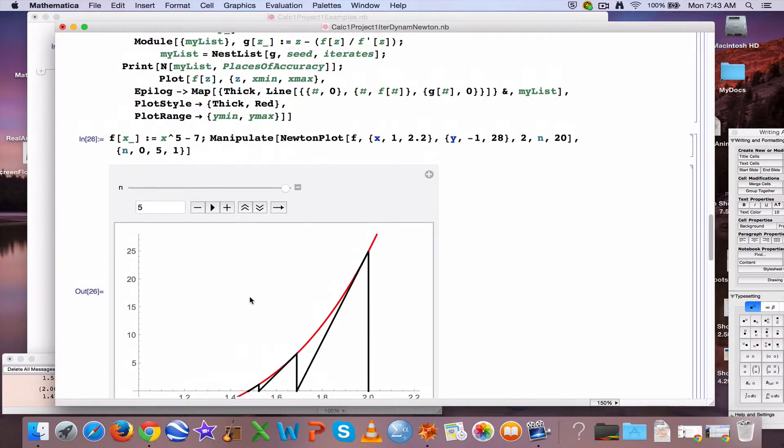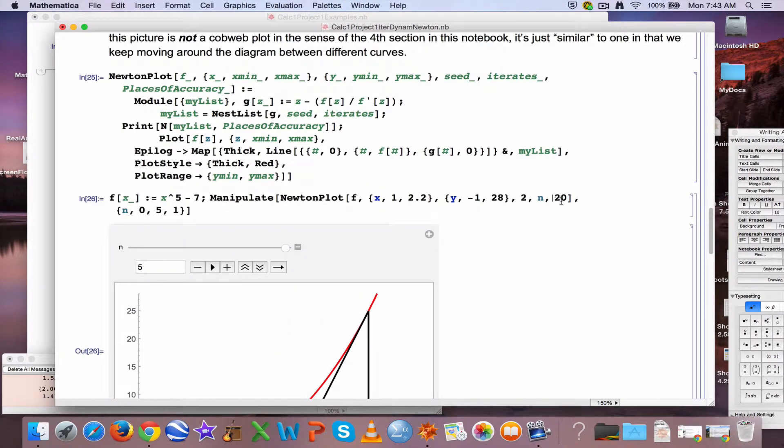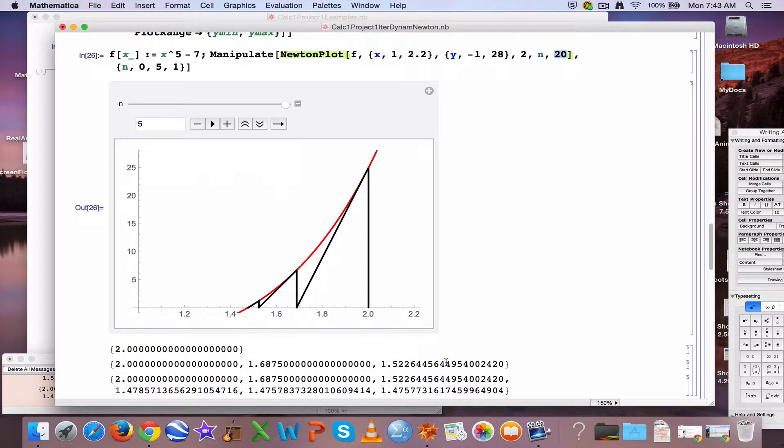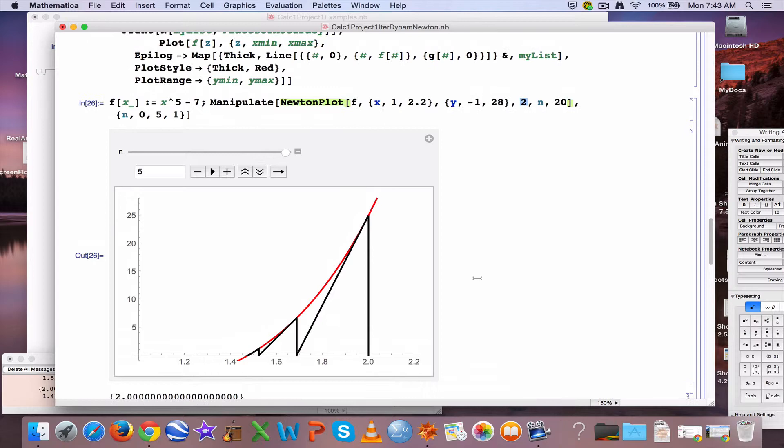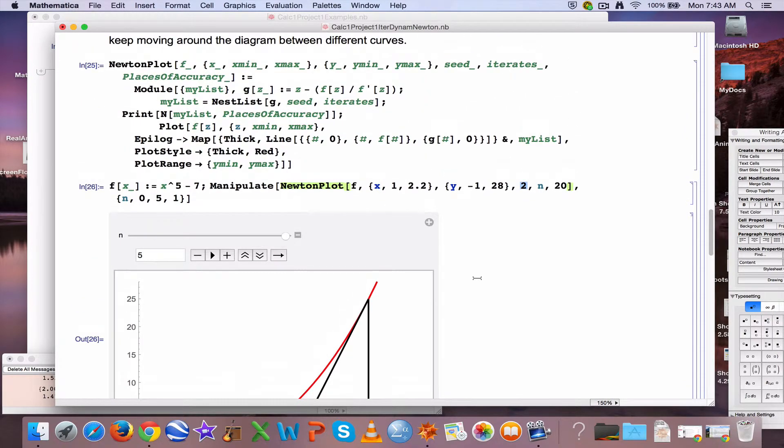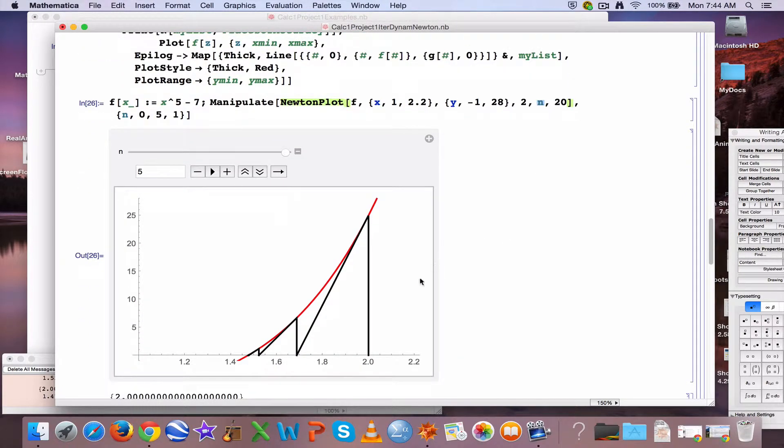A couple of subtleties here, things to watch out for. This places of accuracy input right here, that only works if you give an exact form for your seed. This 2 right there is the seed. Only if you put 2 in exact form as 2 instead of, say, 2.0, which Mathematica assumes you're approximating, will you see the places of accuracy be relevant. Another word of warning is this code is not real optimal. It slows down a lot if the number of iterates gets too high. If you go beyond like 5 or 6 or 7 iterates there for n, it slows down a lot. But you really don't need to go that far anyway. You see a nice graph even with n equal to 3 or 4 oftentimes.